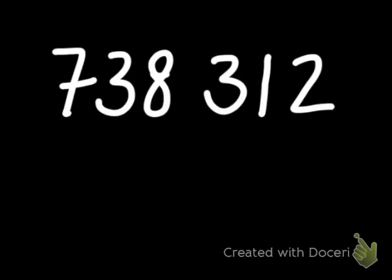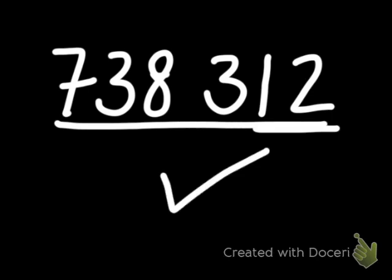So how do we know if a number is divisible by 4? What we have to do is look at the last two digits of that number. If the last two digits are divisible by 4, then that entire number will be divisible by 4. Let's take a look at 738,312. I take a look at the last two digits: 12. Does 4 go into 12? Yes, it does. So 4 will go into the entire number — 4 is divisible into 738,312.